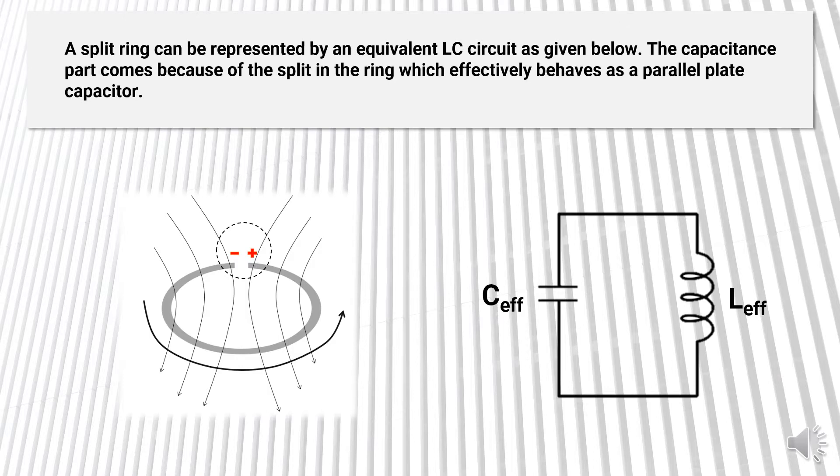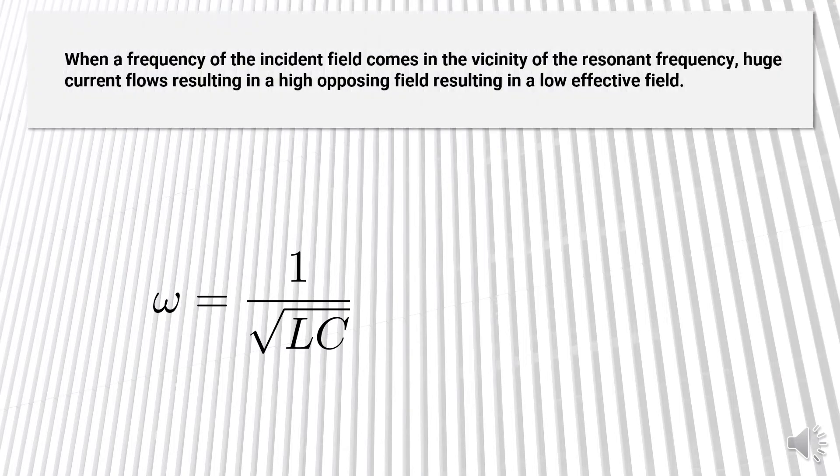The equivalent circuit that we just saw has a natural frequency associated with it, which is given by 1 upon square root L into C.